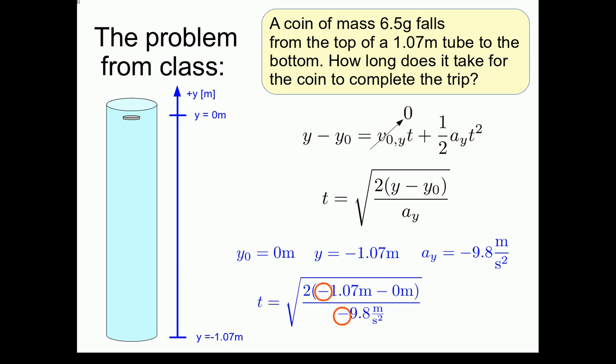Substituting these values into our time expression, we see now it's these two negative signs that cancel. The result is we still have a positive value under our square root. And we still get the same final answer, 0.47 seconds.